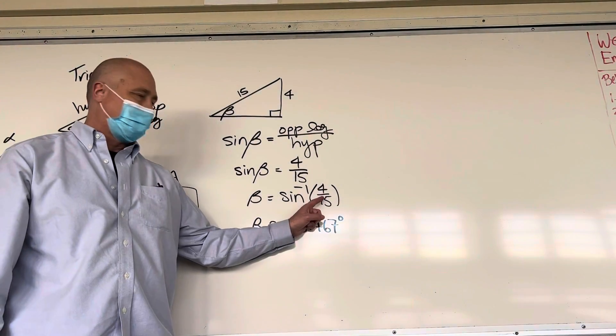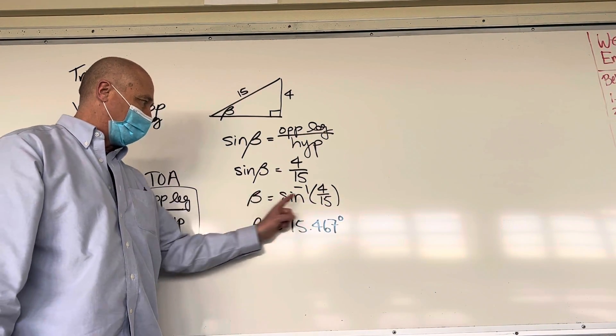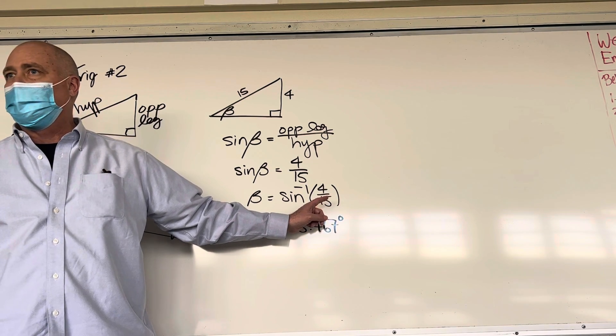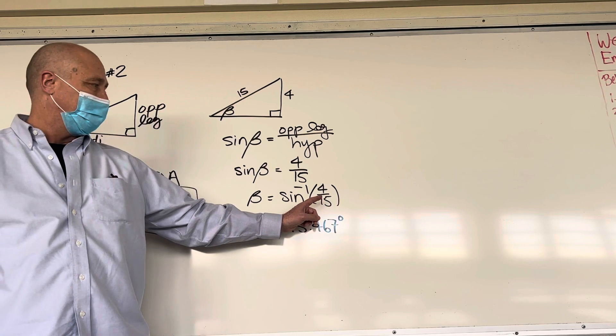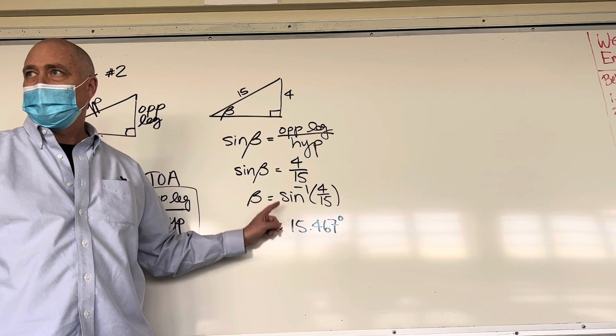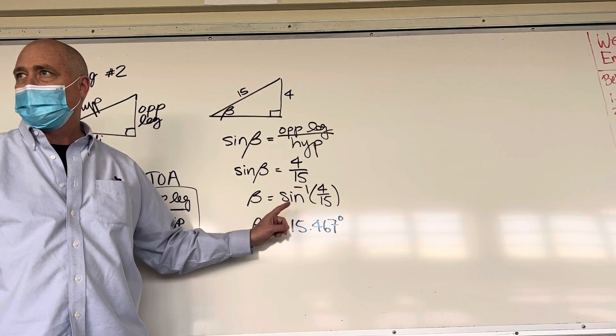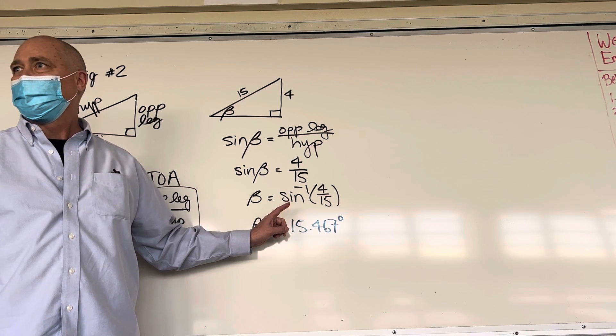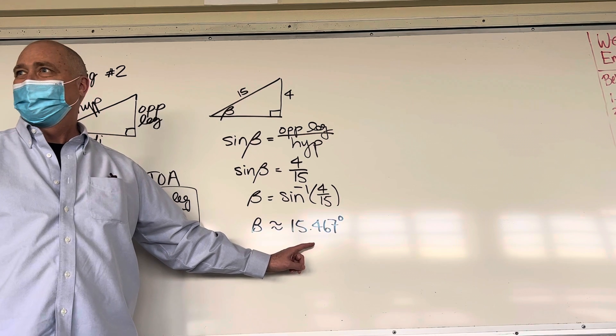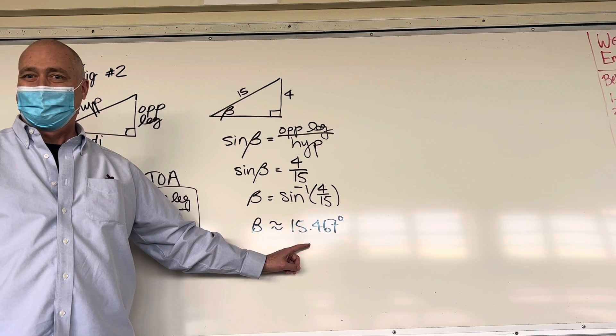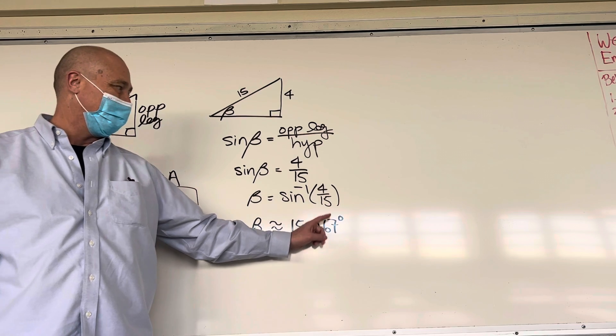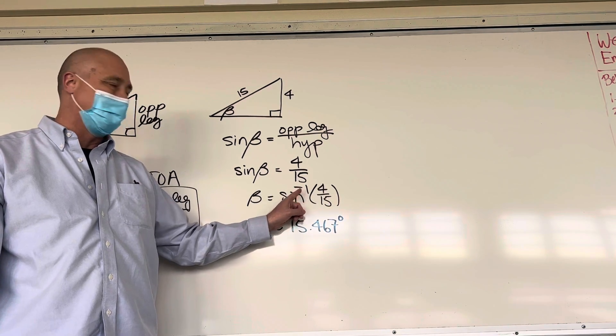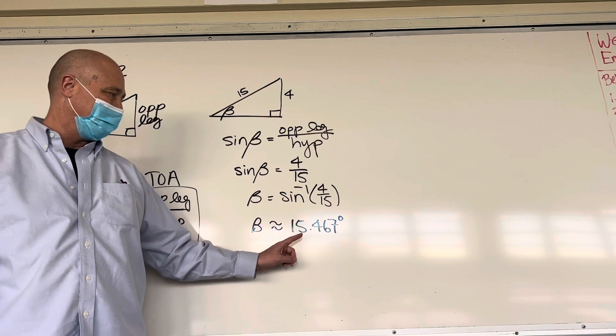iPhones are reverse, so start with this side. This is sort of the reverse way. We're going backwards. Start with 4 divided by 15. Everybody with me on an iPhone? Do 4 divided by 15 equals. Good. Do 2nd key, so sine to the negative 1 shows up, and click sine to the negative 1. Did you get this? Try it again.